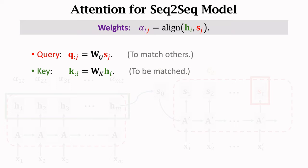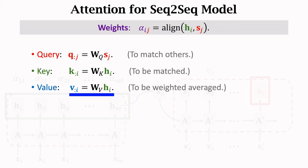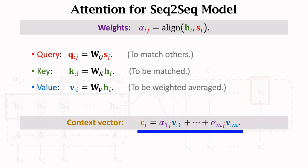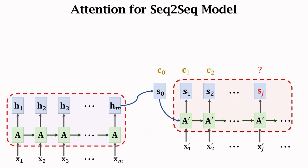We have computed vectors Q and K using linear maps. In transformer, Q is called query — meaning we use Q to match the encoder states. Vector K is called key — meaning it is to be matched. Then apply Hi to matrix WV and denote the product as vector Vi; vector V is called value. Context vector C is computed by weighted averaging vectors V1 to Vm. The matrices WQ, WK, and WV are the parameter matrices in attention, to be learned from training data.